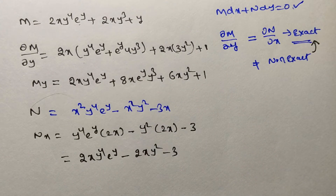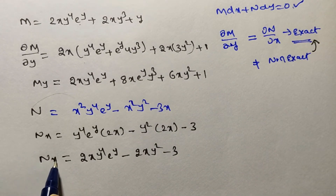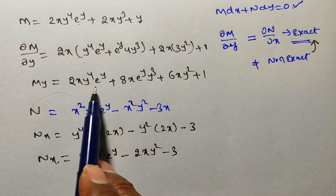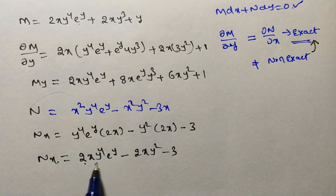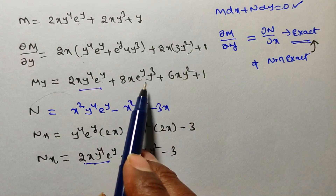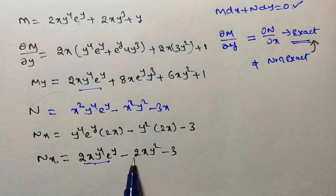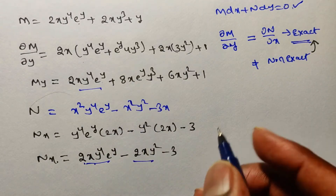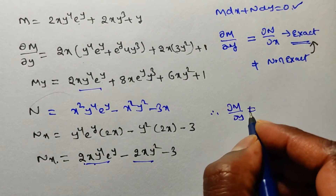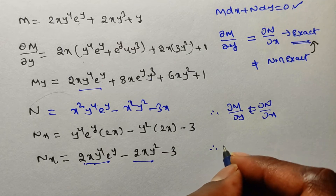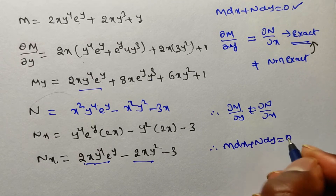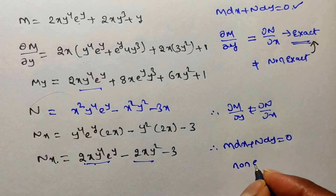Comparing ∂M/∂y and ∂N/∂x: the term 2xy⁴eʸ cancels, but ∂M/∂y has 8xeʸy³ which is not in ∂N/∂x. Therefore ∂M/∂y ≠ ∂N/∂x, and the given equation M dx + N dy = 0 is non-exact.